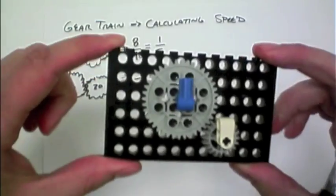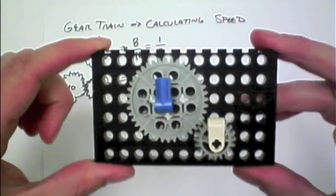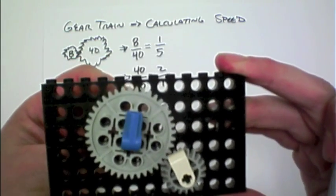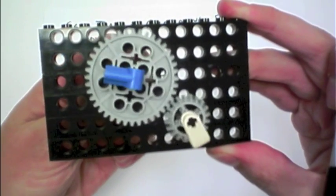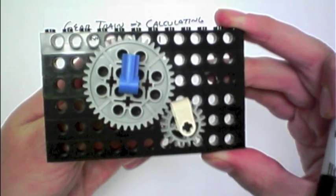And here I have that depicted. If I turn the 40-tooth gear one full rotation, you can see that the 20-tooth gear, the smaller one, goes around twice.